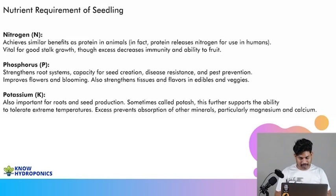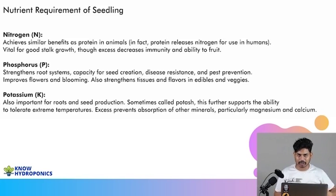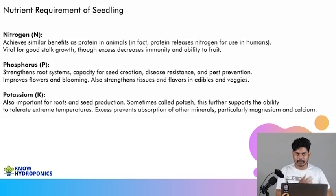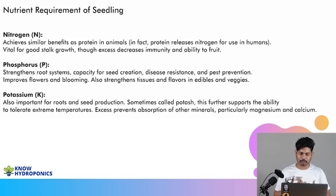Now let's talk about potassium. Potassium is important for root and seed production, and it is the element that keeps pushing the plant toward maturity. It makes sure the plant adjusts to climatic conditions and temperature, goes into the flowering phase, and ultimately into the fruiting phase as quickly as possible — that is the job of potassium.